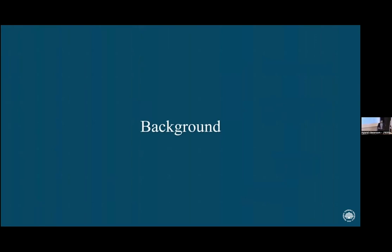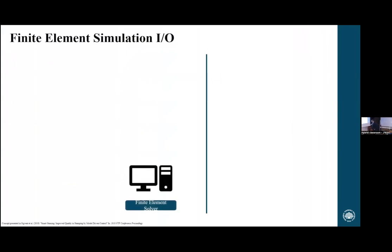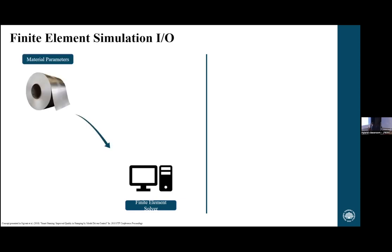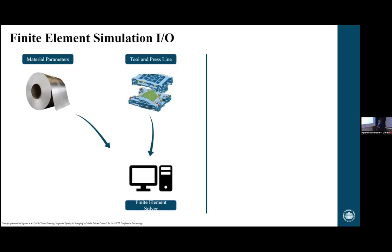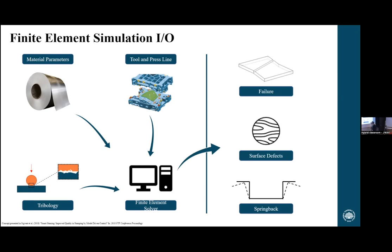A little background about how we make these models. This is done in finite elements software. To set up a simulation, we need three key inputs. First: material parameters describing how the material behaves when deformed, stretched, at various speeds, and so on. Second: information about the tool and press line — the desired component geometry, forming speed, clamping force. Third: tribology, describing the frictional behavior between material and tools. All of that goes into the finite element solver, which should tell us something about failure, surface defects, and springback.